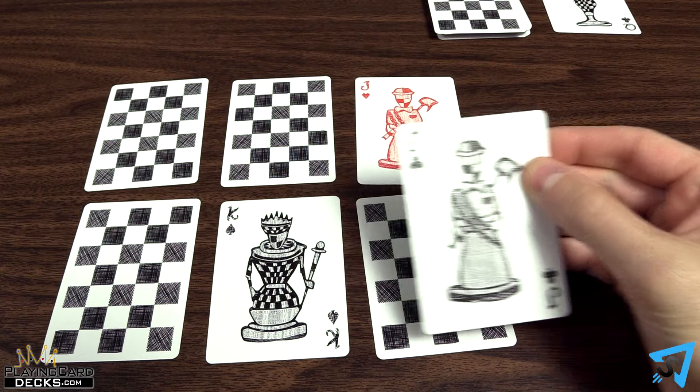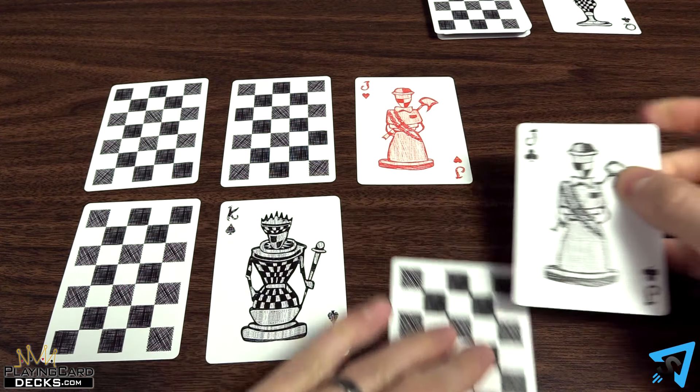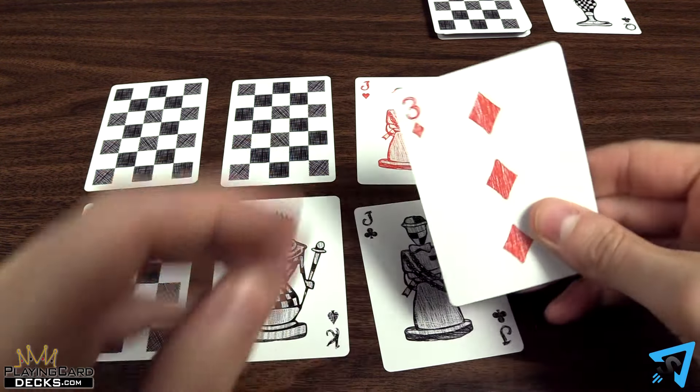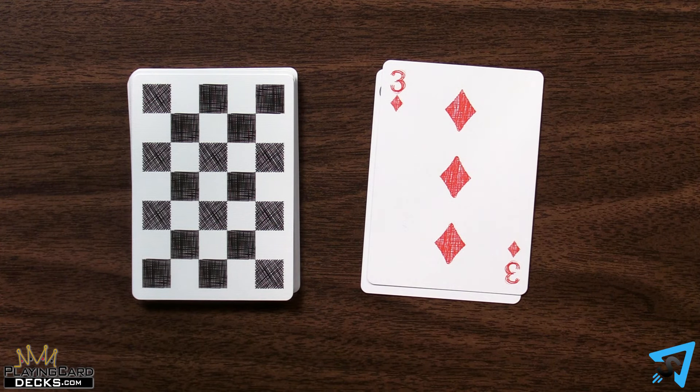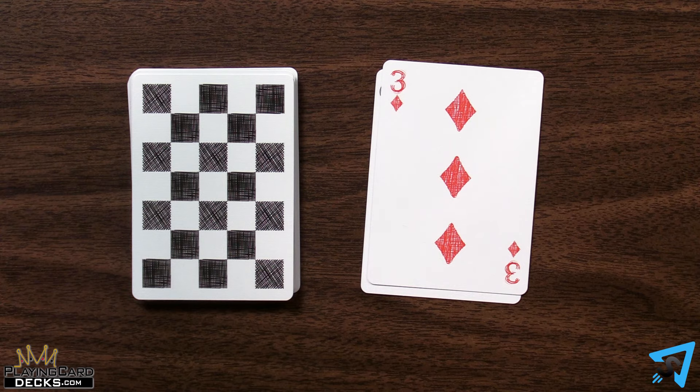If you choose to replace a face down card, you are not allowed to look at it before replacing it. The replaced card is discarded face up to the discard pile, then your turn ends and the next player goes.